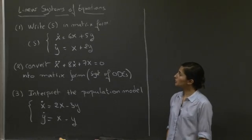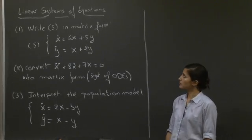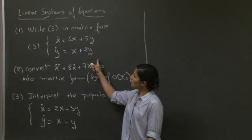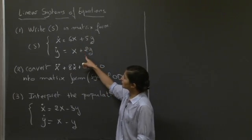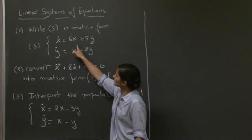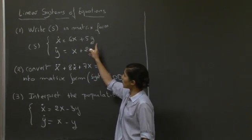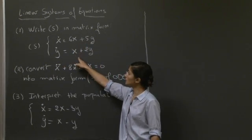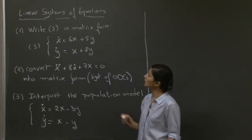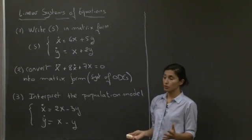Welcome to this recitation. We're going to talk about linear systems of equations. In the first question, we are given a system of equations: x dot equals 6x plus 5y, y dot equals x plus 2y, and we're asked to write this system in matrix form.